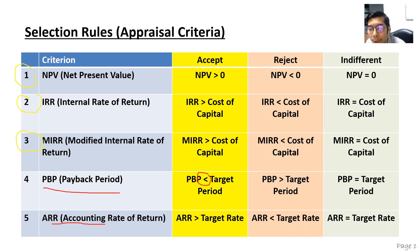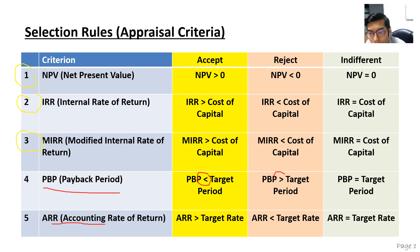For example, if the company targets two years to get back its invested money, and after applying the appraisal technique you get one and a half years, then you can accept that option. If it's more than the target period, you have to reject it. If it equals the target period — say you target two years and get two years — it's indifferent; it's up to you.